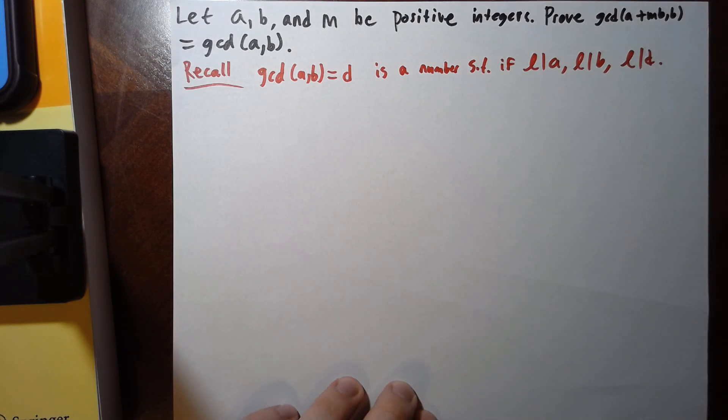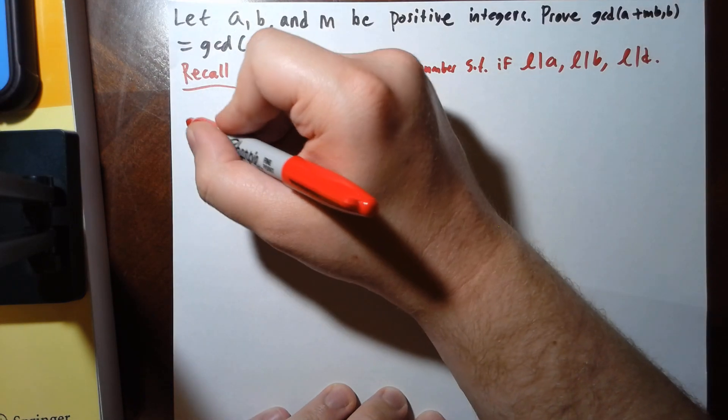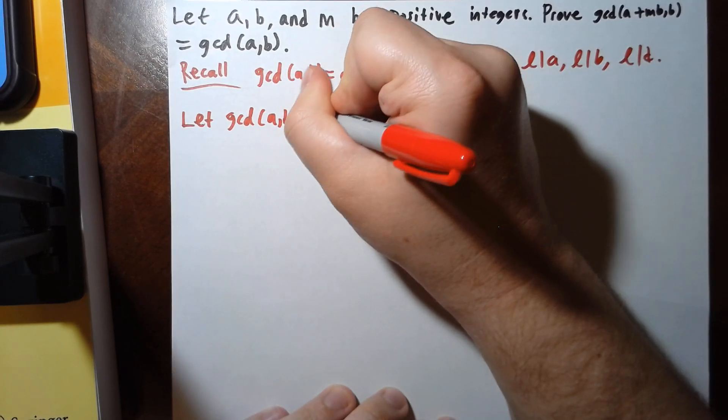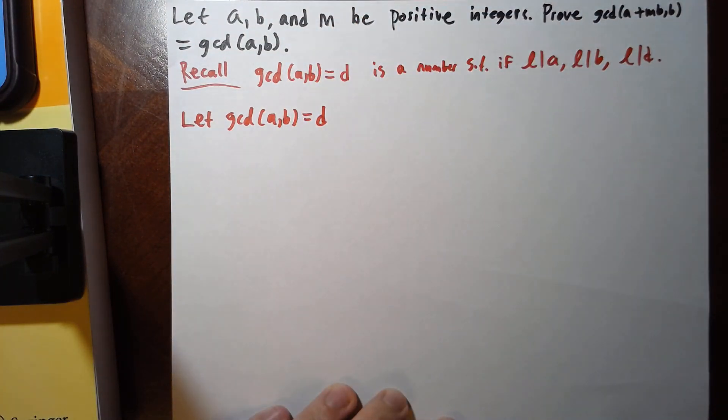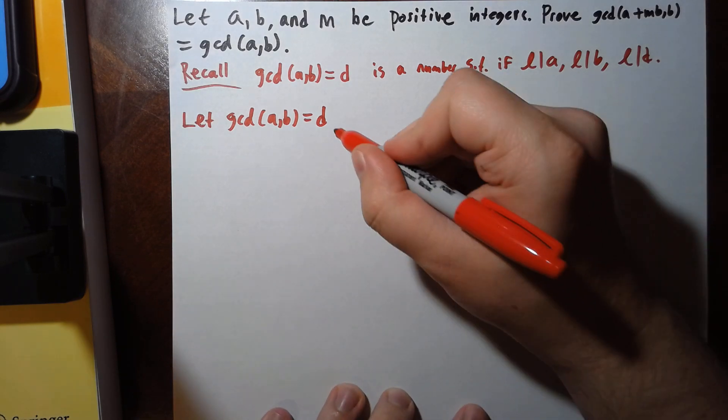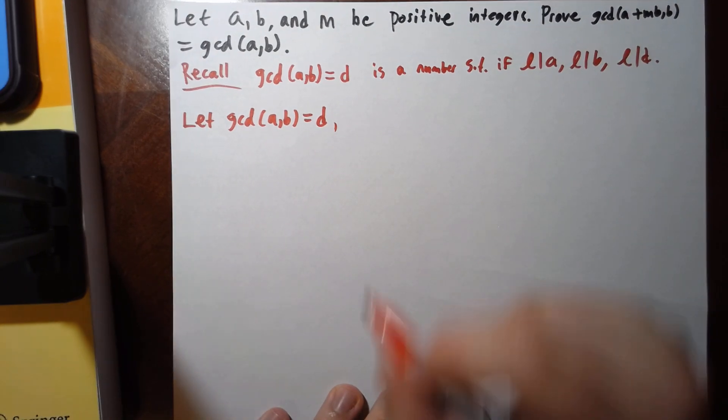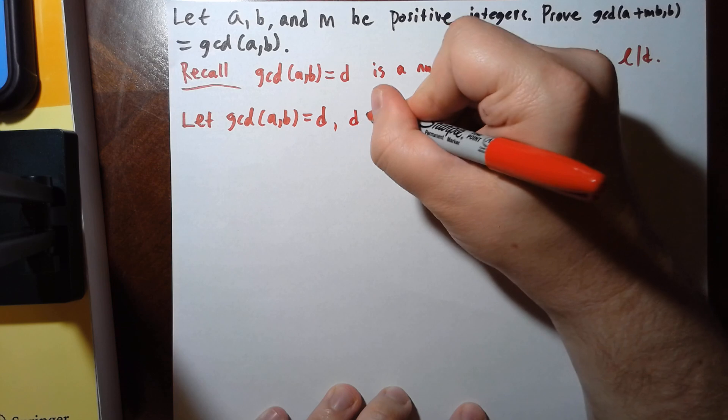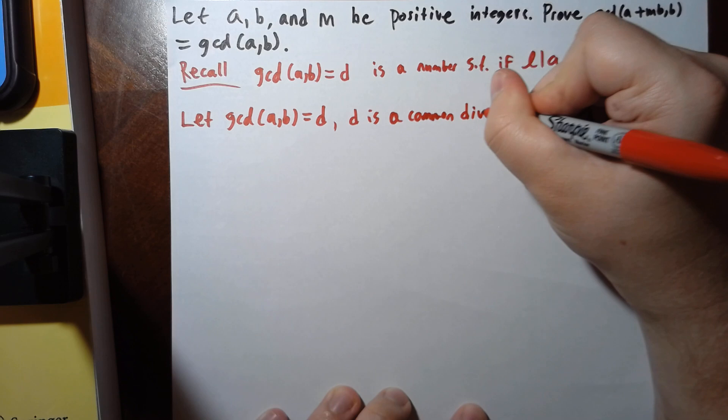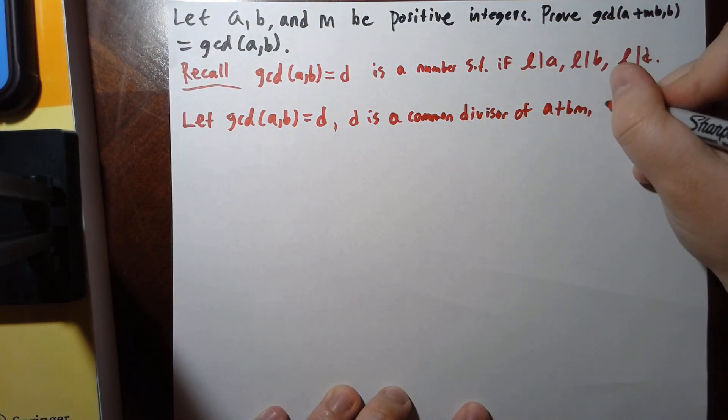So the way I'm going to do this is as follows. Let the GCD of a and b equal d. Step one is to show that it is a common divisor. So d is a common divisor of a plus bm and b.